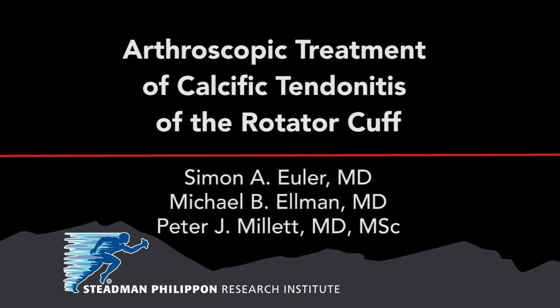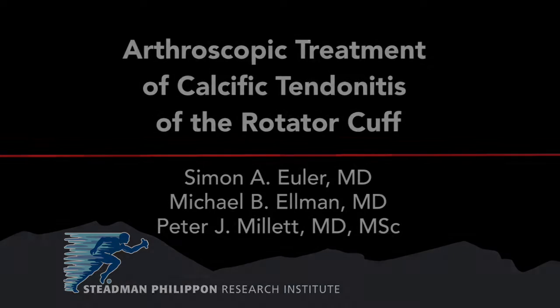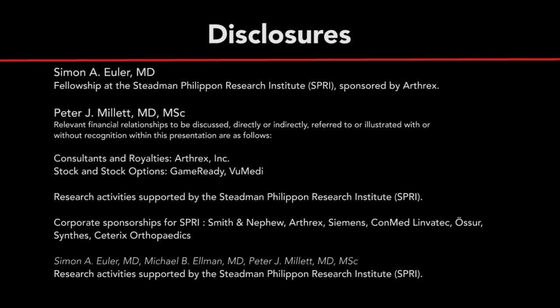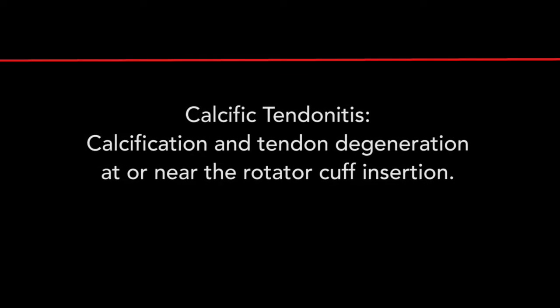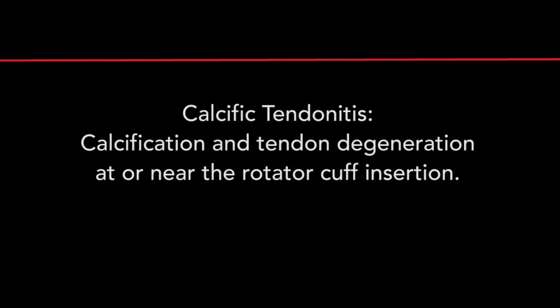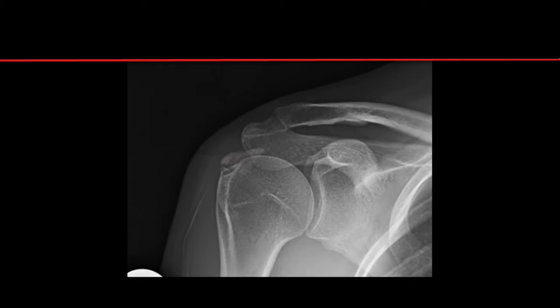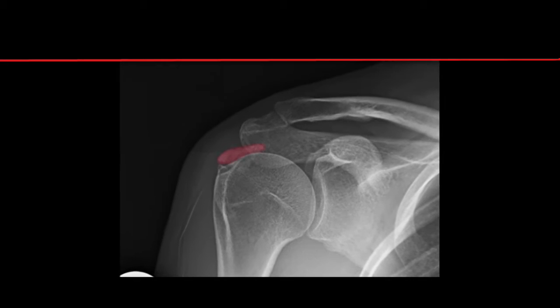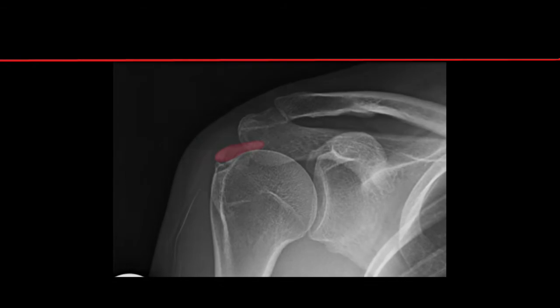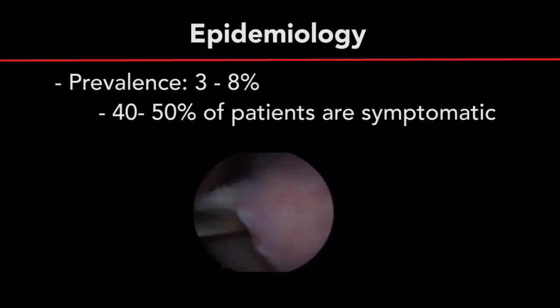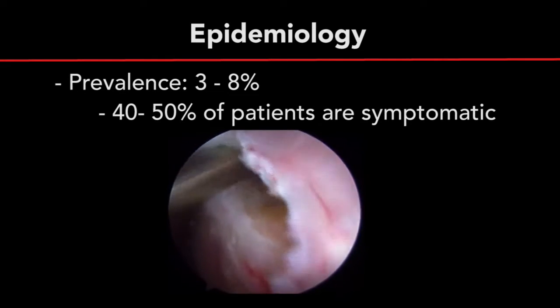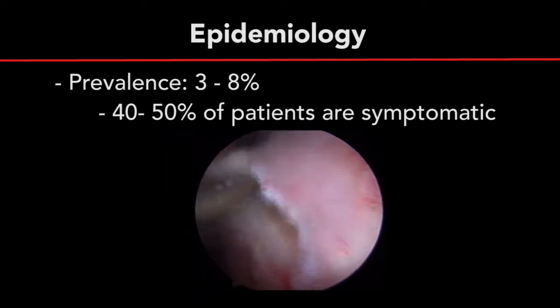Arthroscopic Treatment of Calcific Tendinitis of the Rotator Cuff. Calcific tendinitis is defined as calcification and tendon degeneration at or near the rotator cuff insertion. The prevalence is 3 to 8 percent, yet only 40 to 50 percent of patients are symptomatic.